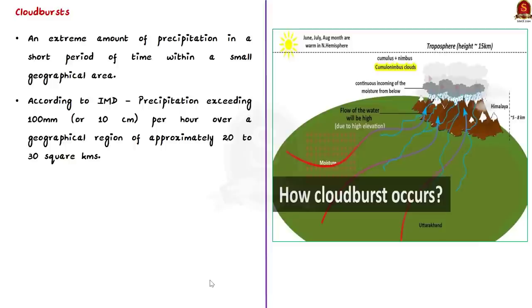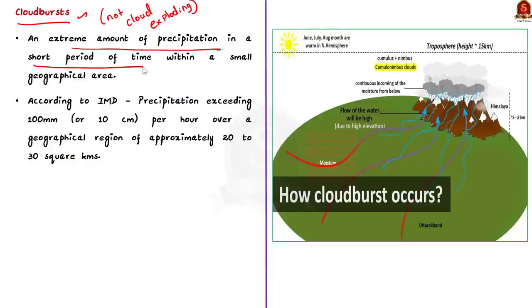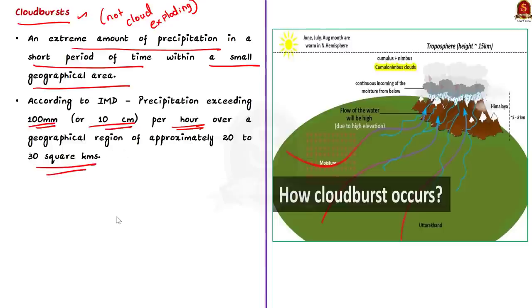Let us start with the definition of cloudburst. The word has 'cloud' and 'burst' in it, but you must not associate it with a cloud exploding — that is a misnomer. Cloudburst is defined as an extreme amount of precipitation in a short period of time within a small geographical area. According to the Indian Meteorological Department, an unexpected precipitation exceeding 100 mm or 10 cm per hour over an area of approximately 20 to 30 km² is labeled as cloudburst.